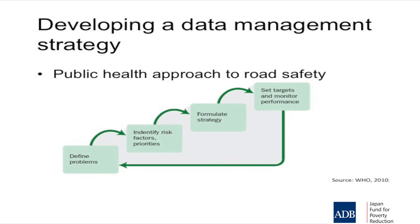This diagram, from page 5 of the data systems manual, describes the public health approach to road safety as a cycle. At the start, we identify and analyze our data to find out what our risks are. Then we think about solutions — what can we do to fix these problems? We set targets and watch what happens. We collect data to monitor the effect: has this worked? Then back to the start: monitor the data, identify risks. This cycle continues on and on — it is something we need to start doing now and continue forever.